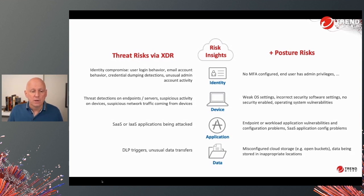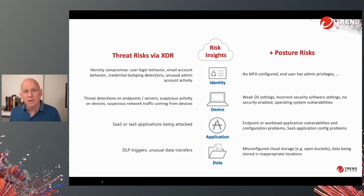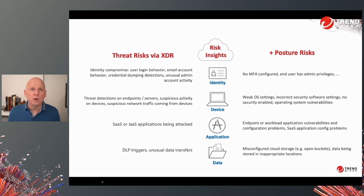When you think about threat risks related to identities, that's stuff like unusual user login behavior — login velocity, brute force attempts — or email account behavior that's unusual, like an account sending out internal phishing emails as a sign of identity compromise, or credential dumping detections that you can tie to the credential being dumped. On the posture side related to identity, you're thinking about configuration risks like no MFA configured, or an end user having admin privileges — pre-attack risks with a myriad of variations.